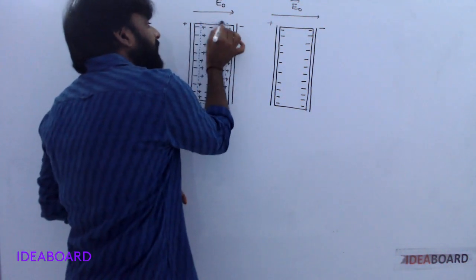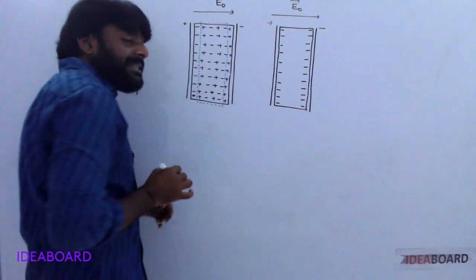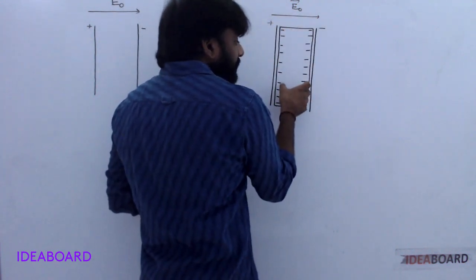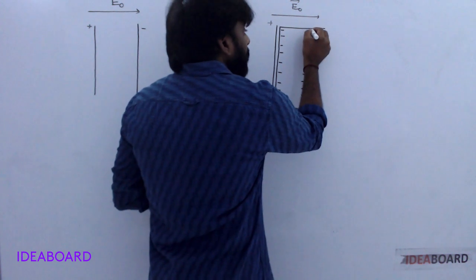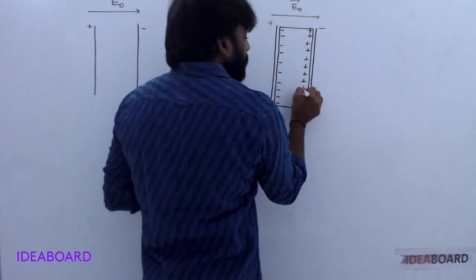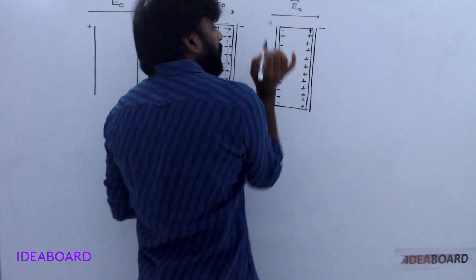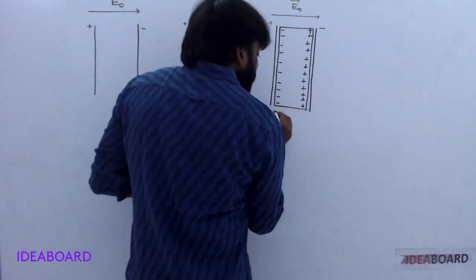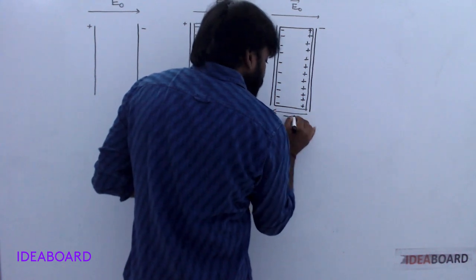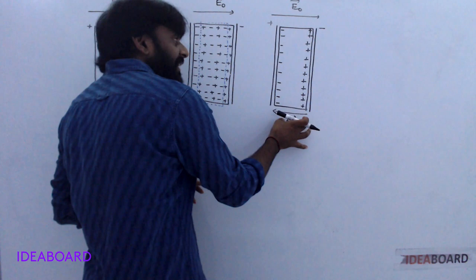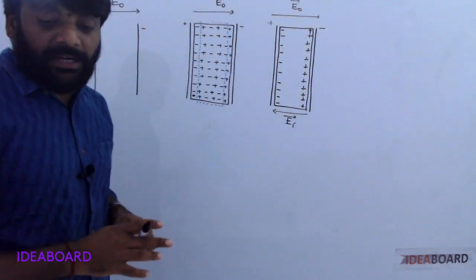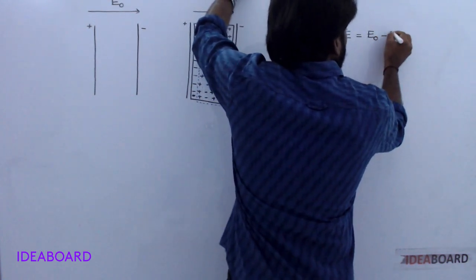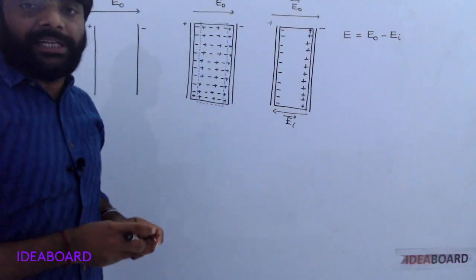Positive and negative charges cancel inside the dielectric. Charge only exists on the surface of the dielectric. One side is negative, the other side is positive. Negative is induced nearer to the positive plate, and positive is induced nearer to the negative plate. Due to this, the induced electric field direction is opposite to the applied electric field direction.